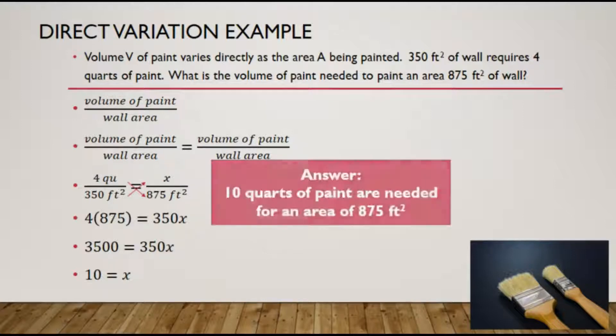This is the answer to this problem. 10 quarts would be needed to paint an area of 875 square feet. And this is another way if we don't need that equation for this direct variation, or the constant of proportionality for solving this problem.